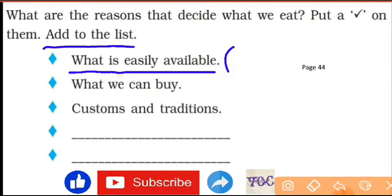Okay, make a tick. Next is: what we can buy. What we can buy, this is also a reason. So what we can buy, this is also correct. Make a tick.